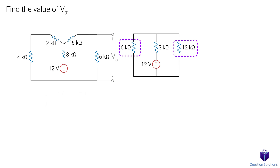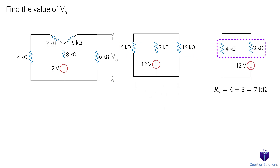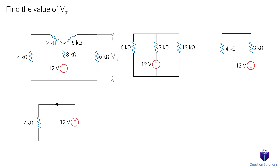Next, we see that these two resistors are parallel to each other, so let's combine those. Lastly, these two resistors are in series, so we can add those together. Current will flow this way, so that means the positives and negatives for our resistor will be like this. Now we can use Ohm's law to figure out the current in the circuit.